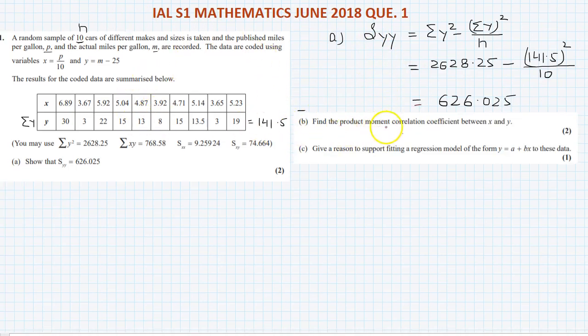Now second part is find the PMCC, product moment correlation coefficient, between x and y. Part b: we have to find r and that is equal to S_xy divided by root S_xx and root S_yy. So that is equal to, we have here S_xy is 74.664.